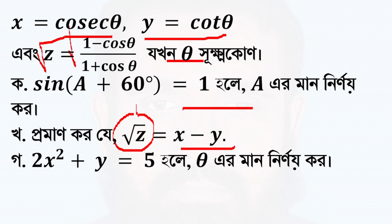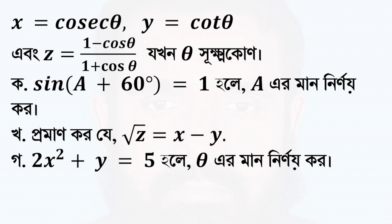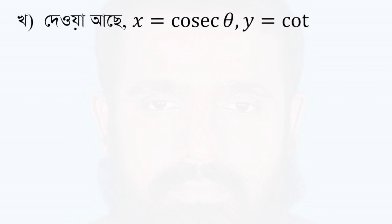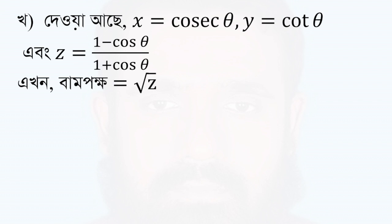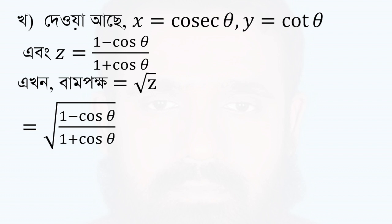Root z is equal to x minus y. x is equal to cos theta and y is equal to cos theta. So z is equal to 1 minus cos theta by 1 plus cos theta, and the root of z is root z. So z equals 1 minus cos theta by 1 plus cos theta.